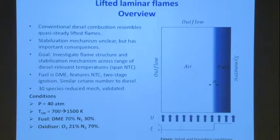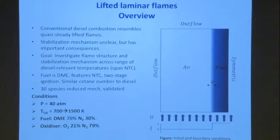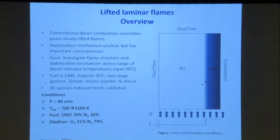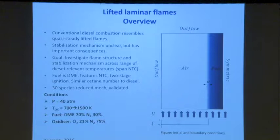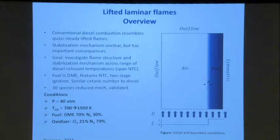Conventional diesel combustion resembles a bunch of quasi-steady lifted flames once the ignition process is over and a stationary flame exists, but the stabilization mechanism is still somewhat unclear. We investigated this with the simplest fuel exhibiting two-stage NTC behavior — dimethyl ether, an oxygenated hydrocarbon fuel with a similar reactivity or cetane number to diesel fuel. We were able to simulate DNS with a 30-species reduced mechanism validated under simpler homogeneous reactor and 1D flame conditions.